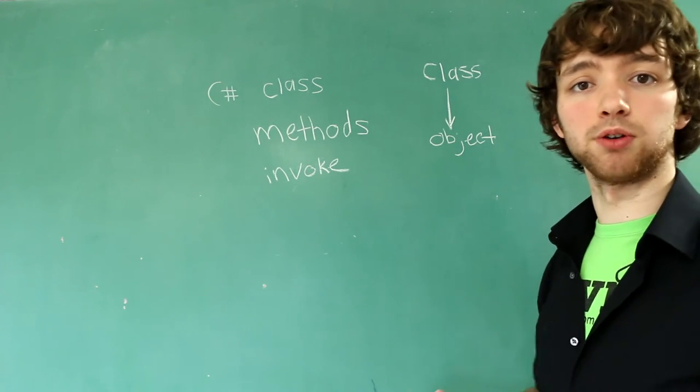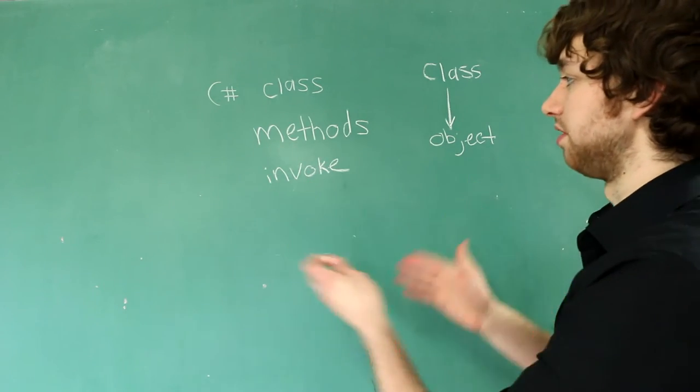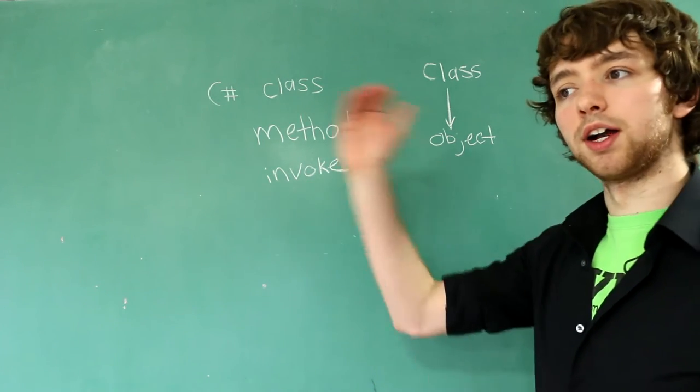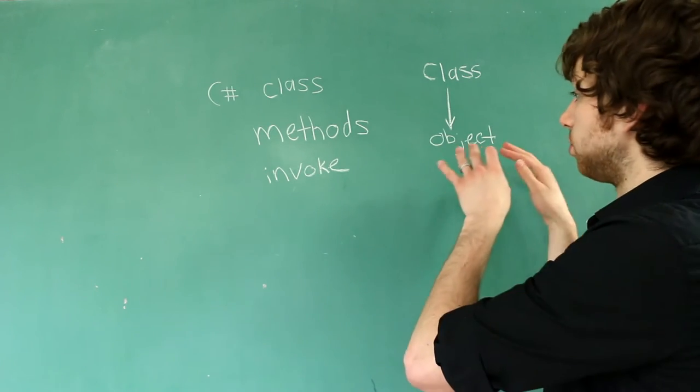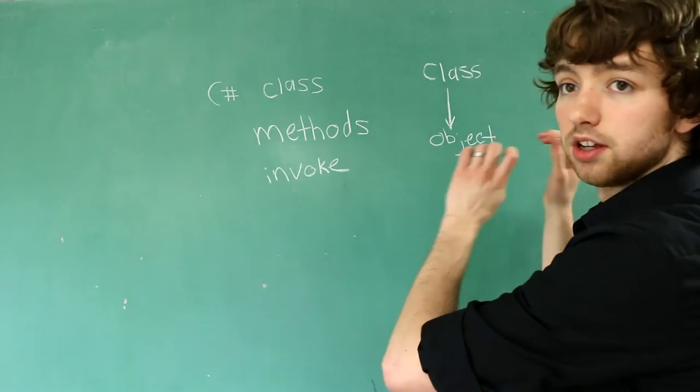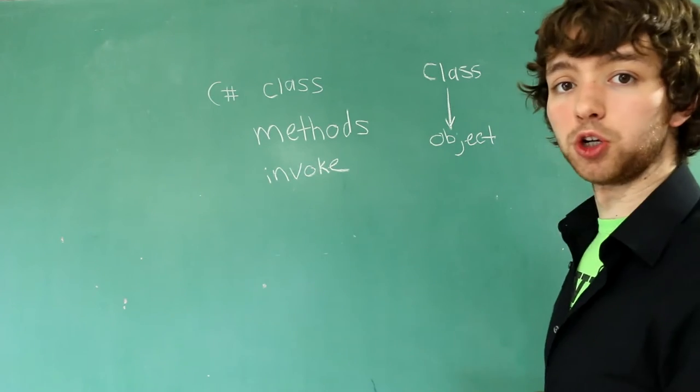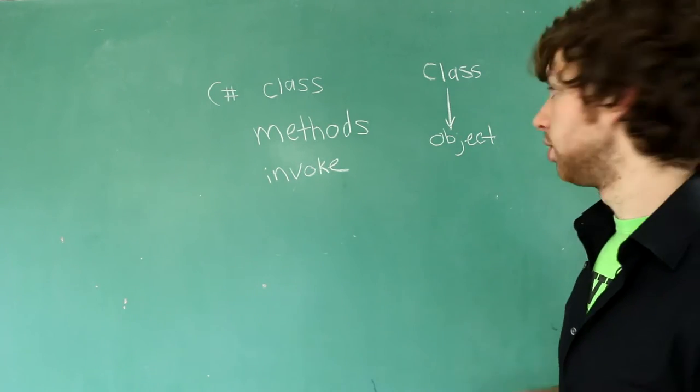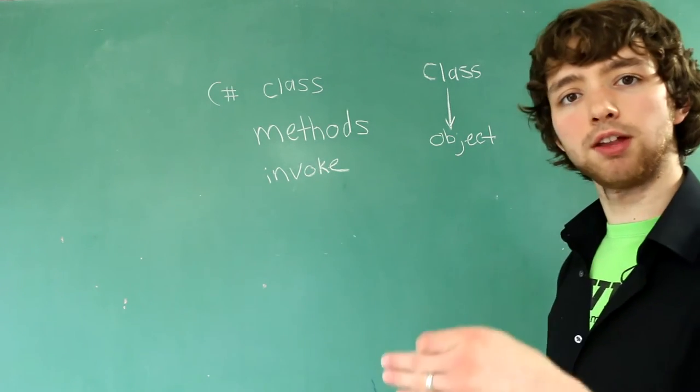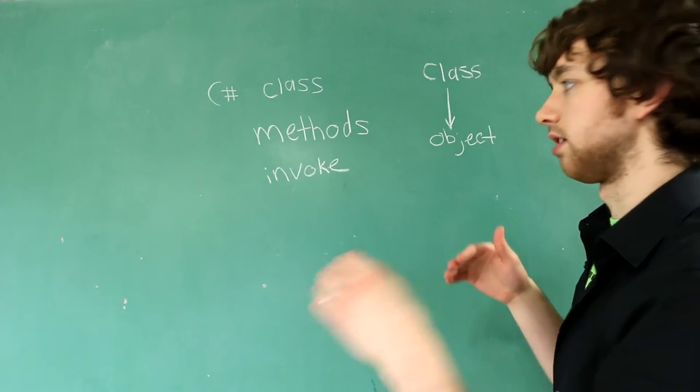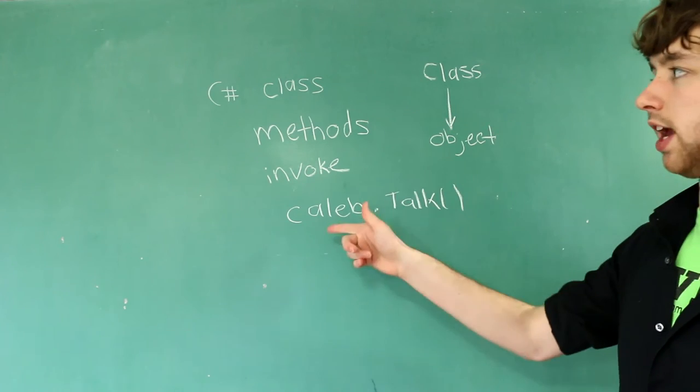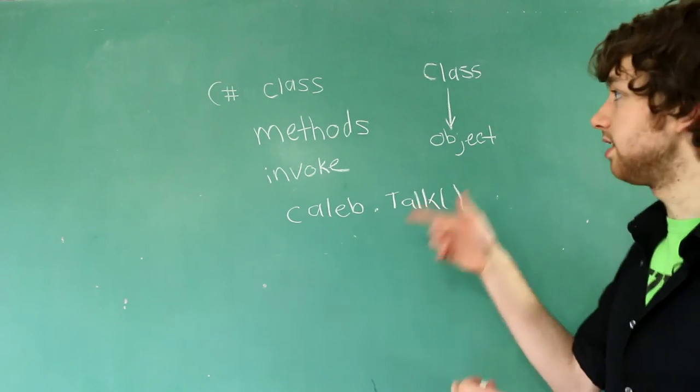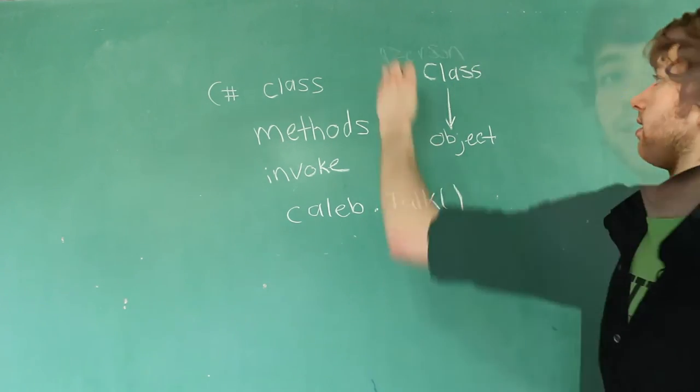I'll be explaining it as we type out code, but this will give you the fundamentals of what we need to know. A class is instantiated into an object, and then you can invoke the methods in that object. So if we created a class called Person, we could make an object called Caleb, and then we could invoke the talk method on the Caleb object, which is an instance of the Person class.